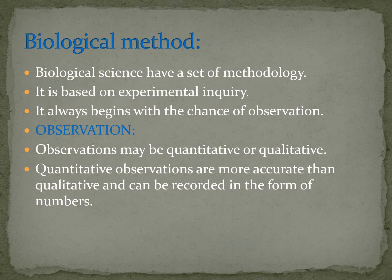Observations can be qualitative or quantitative. Quantitative observations are more accurate than qualitative observations because with quantitative observations we can record data precisely and consistently.